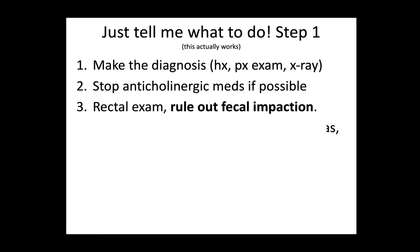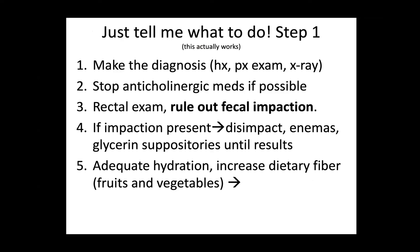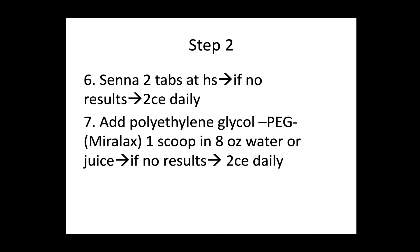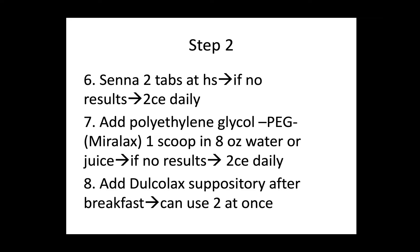Rule out impaction by digital rectal exam. If impaction is present, disimpact with enemas and glycerin suppositories until results — call GI if inadequate. Ensure adequate hydration and dietary fiber. You can start with senna two tabs once or twice a day; if that doesn't work, add polyethylene glycol powder once or twice a day. You can also try to retrain the bowel to move after breakfast using bisacodyl suppositories — up to four at once — combined with the behavioral modification of using the toilet at the same time every day.